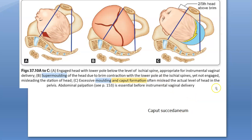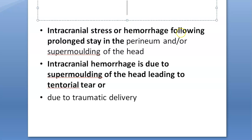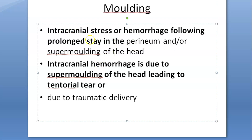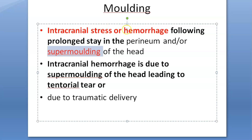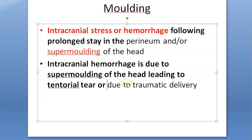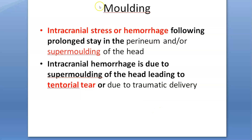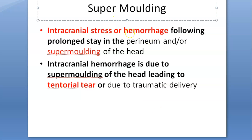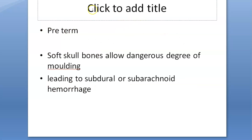So you can see molding, super molding, and excessive molding - so many terminologies. Basically, in the second stage of labor when the baby is trying to come out, because of super molding there can be increased intracranial stress or hemorrhage. The problems with super molding are: increased intracranial stress, hemorrhage, and tentorial tear.